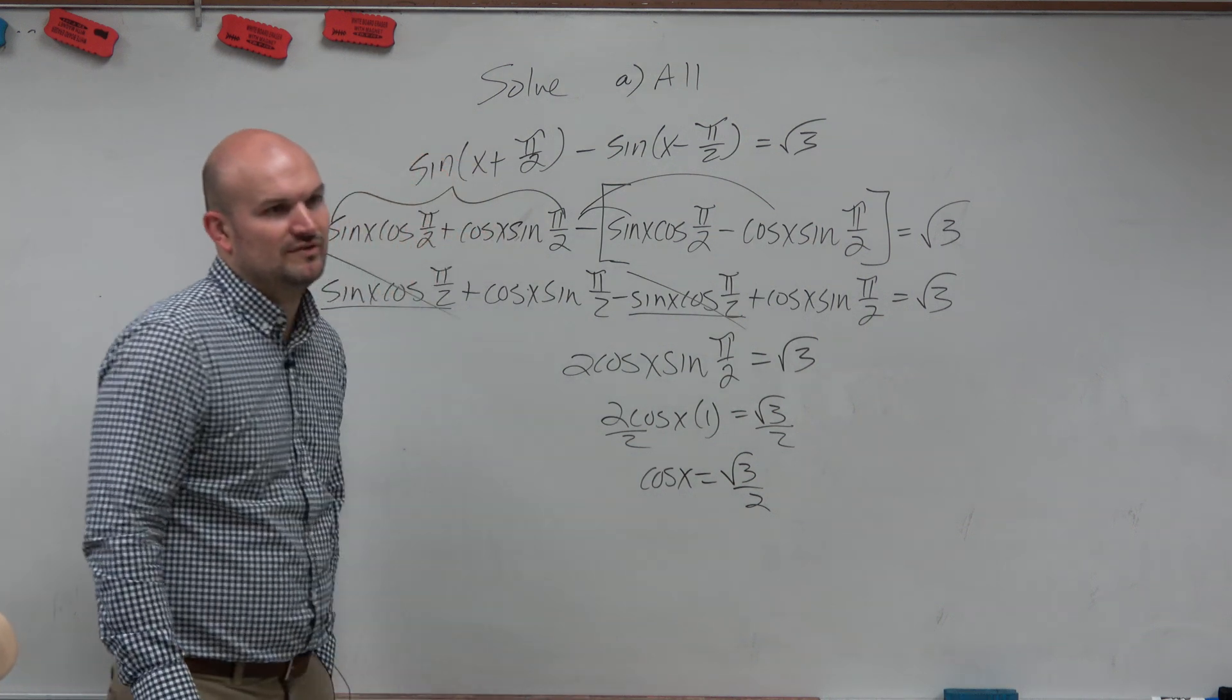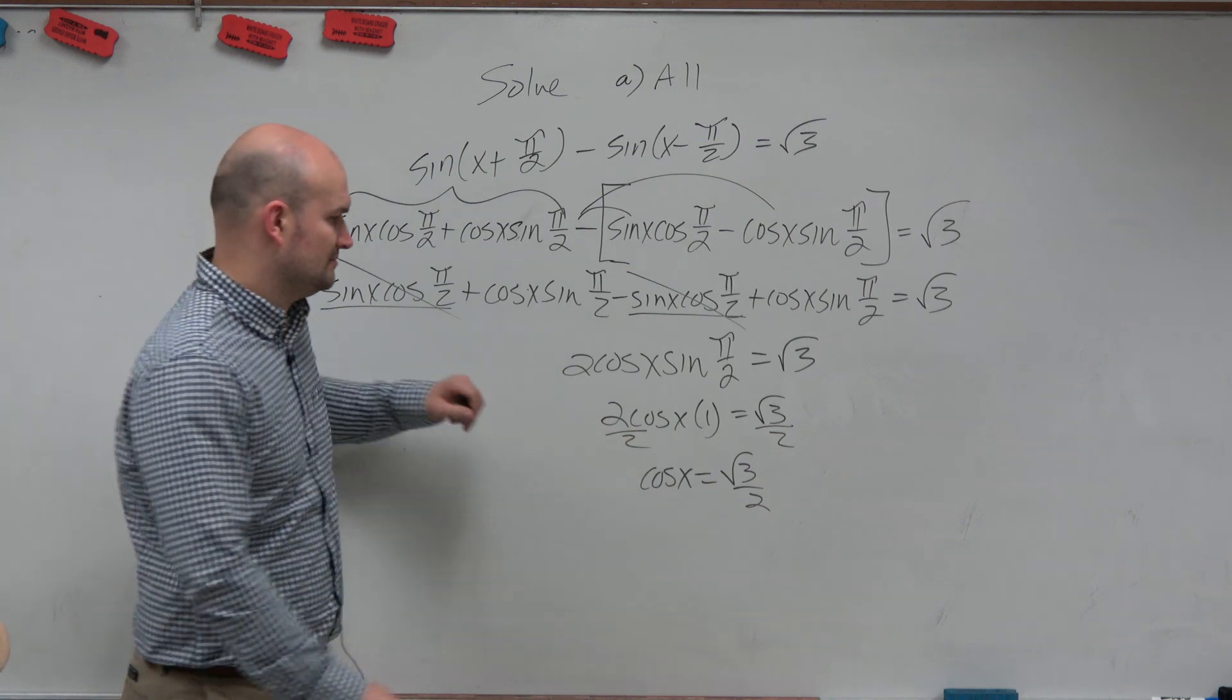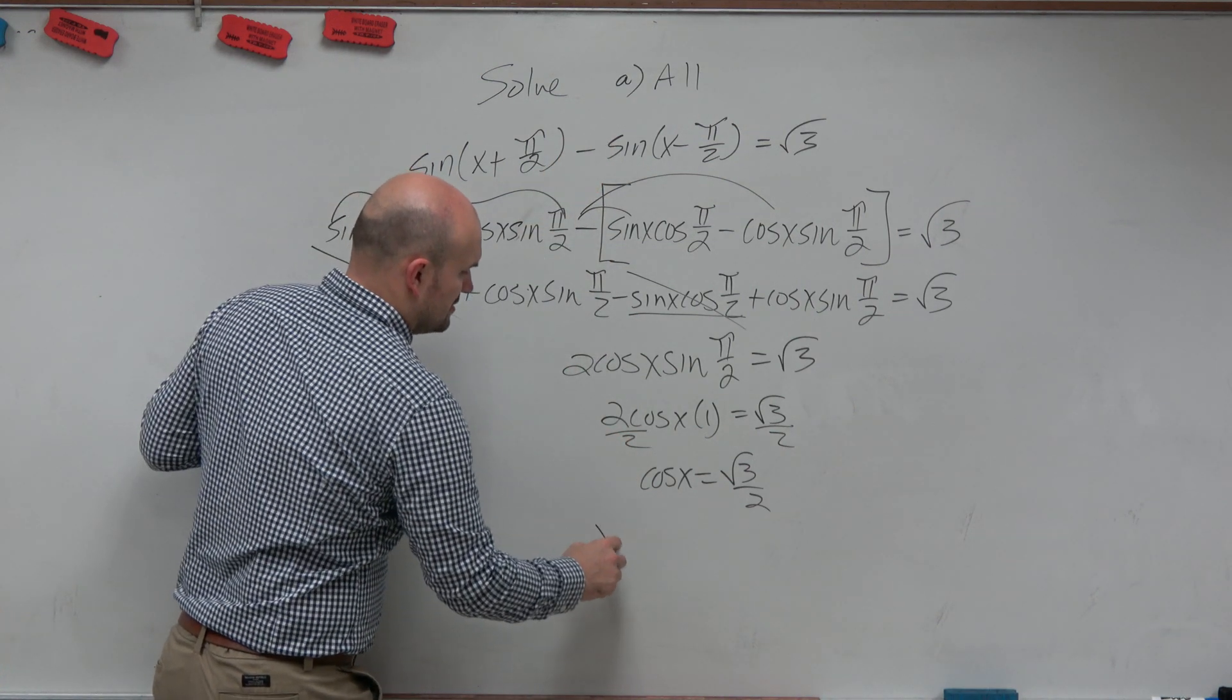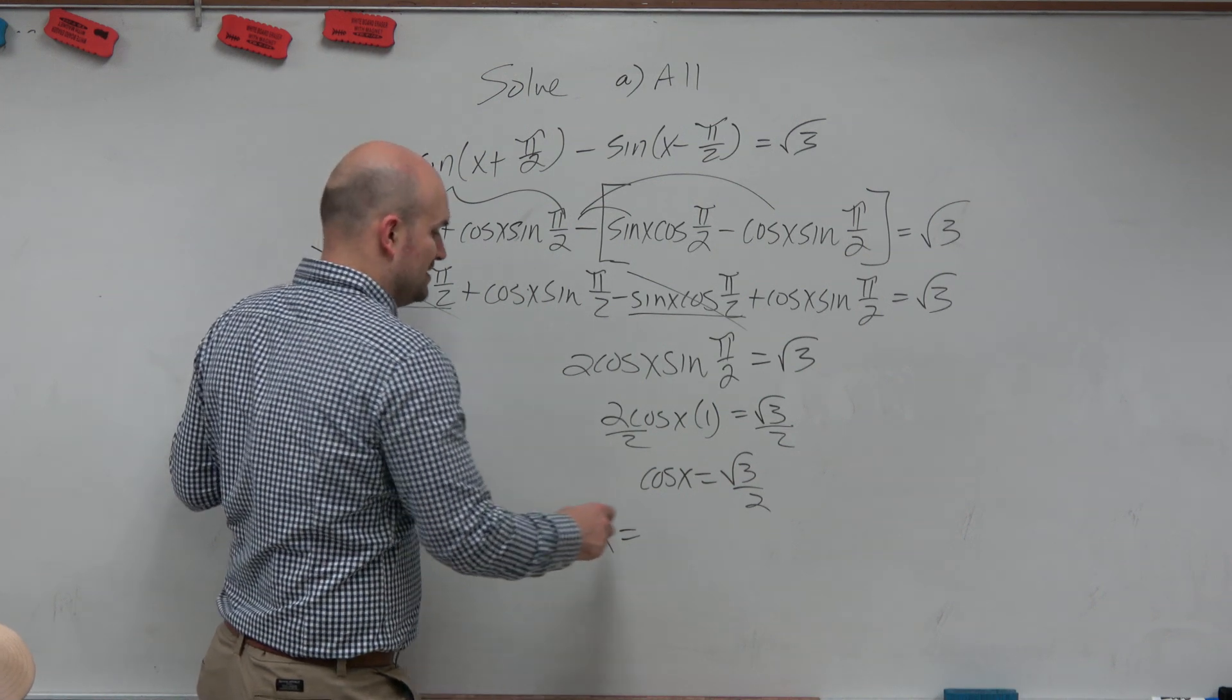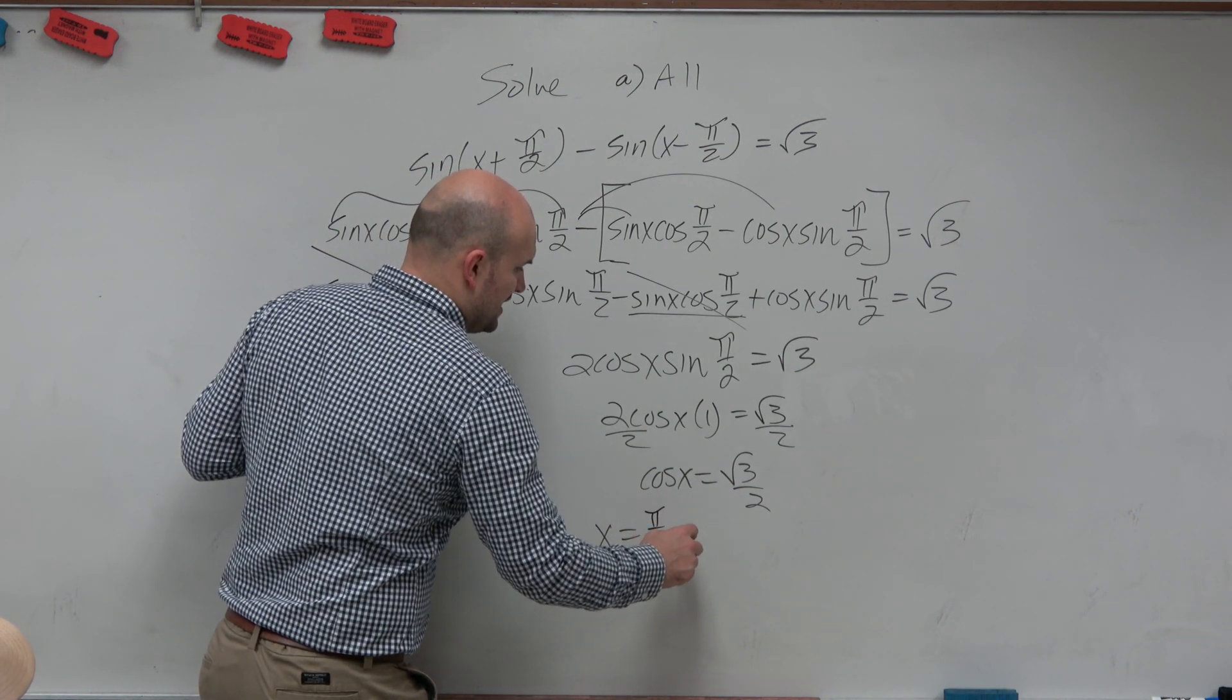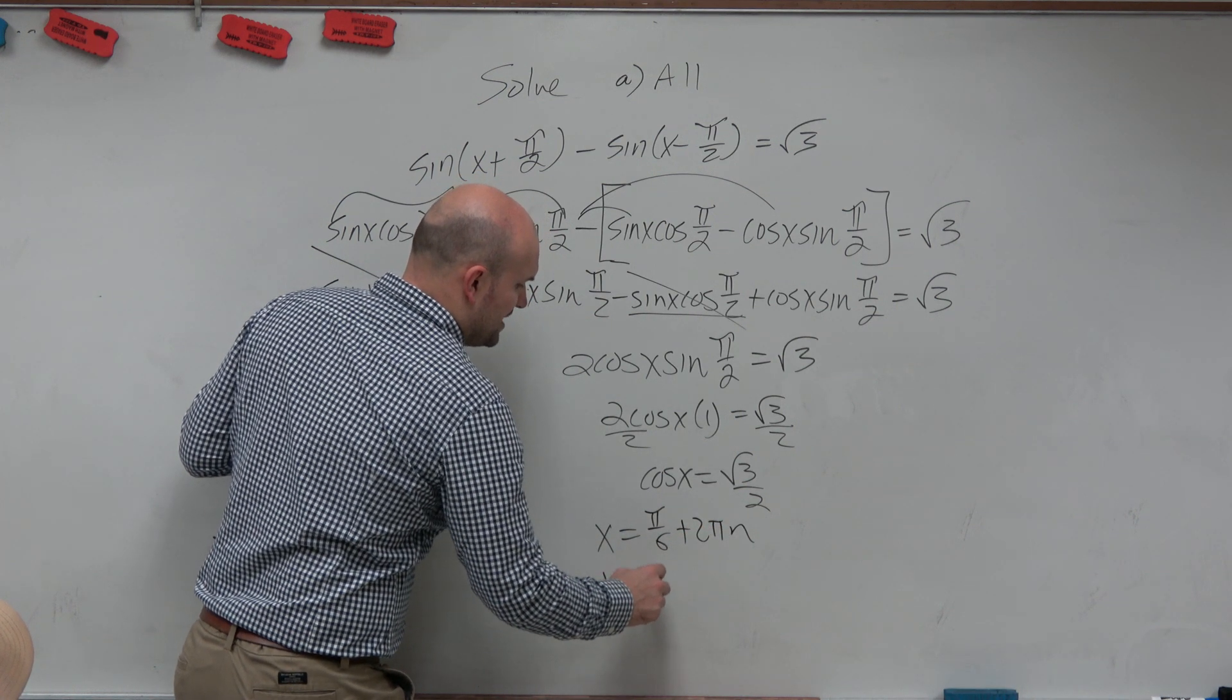So really, it's not actually that hard, because when is cosine of x equal to square root of 3 over 2? For all the solutions, x is equal to π/6 and 11π/6.